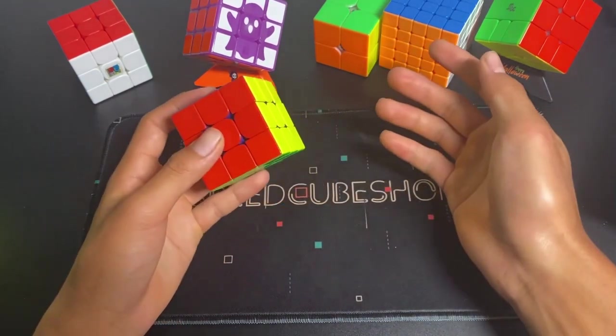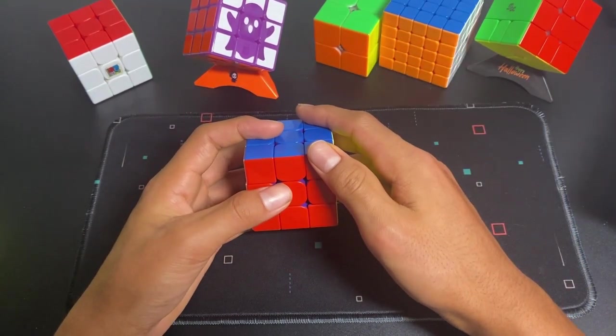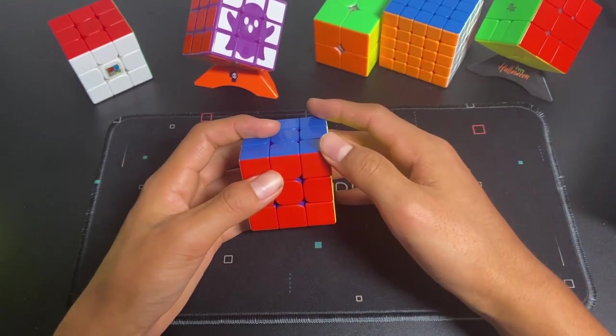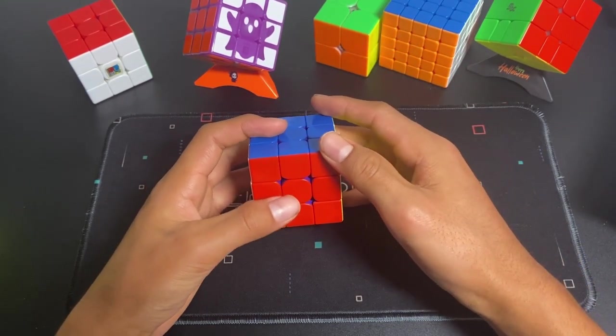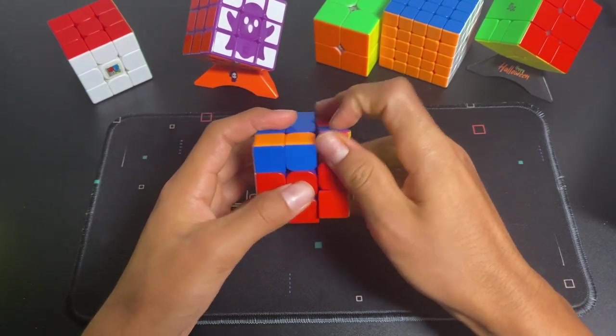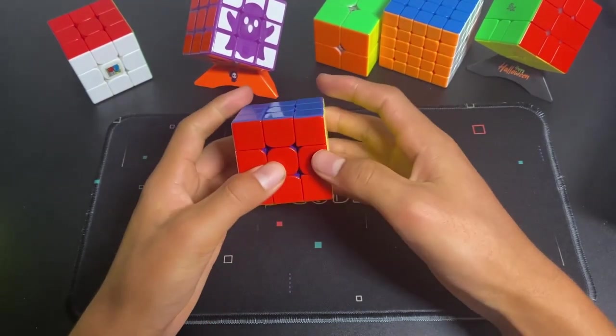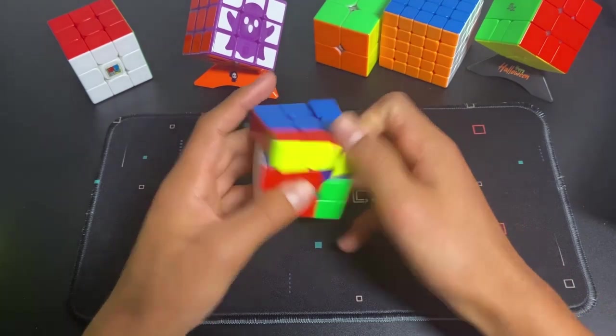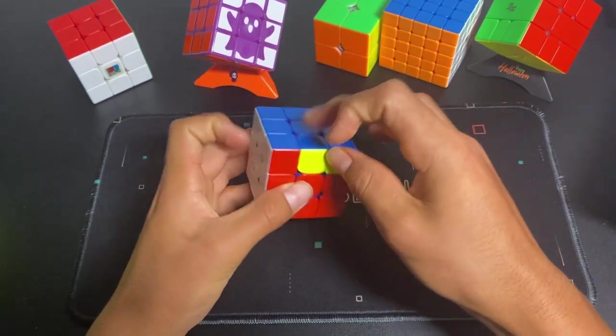And if you're an intermediate cuber, then you should know two-look PLL, which is where you see one case, and then first, you orient all of the corners,